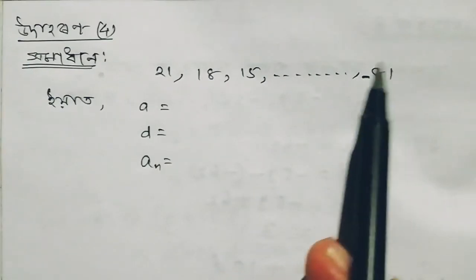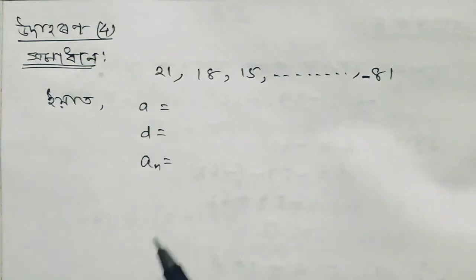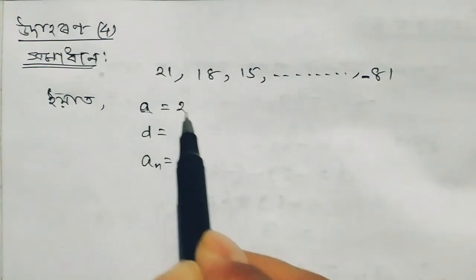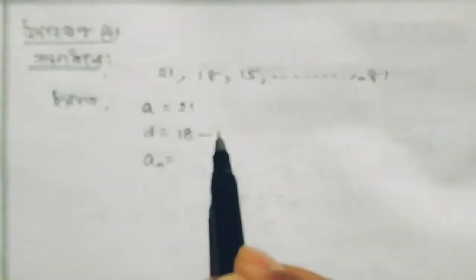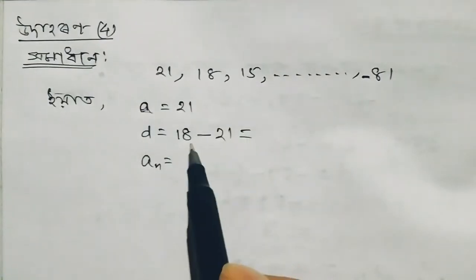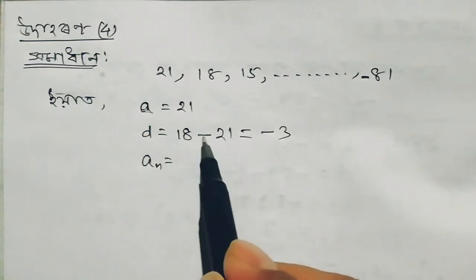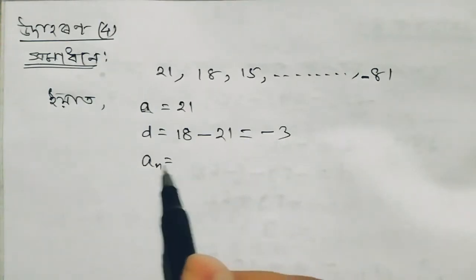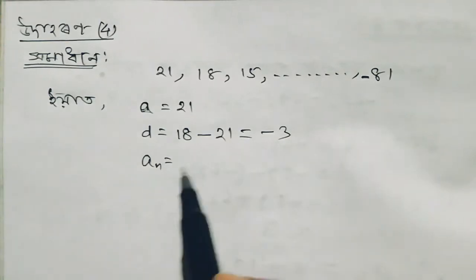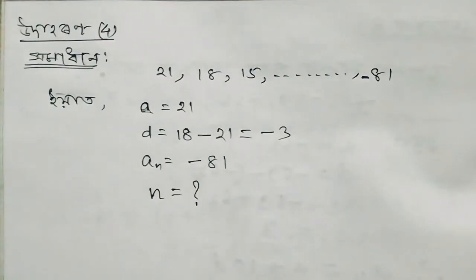The sequence is 21, 18, 15... The common difference: 18 minus 21 equals minus 3. So d equals minus 3. And the last term a_n equals minus 81.